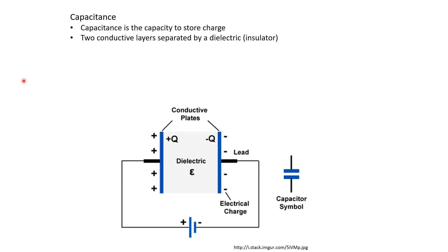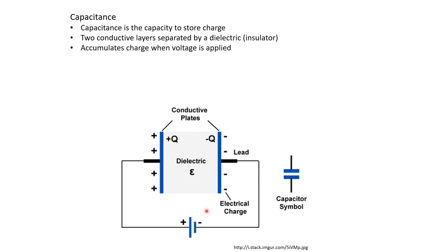So here is a schematic. You have one conducting layer here, another conducting layer here, and these two are separated by an insulating material. And if you connect this capacitor to a source of voltage like a battery, then charge can flow through the capacitor.